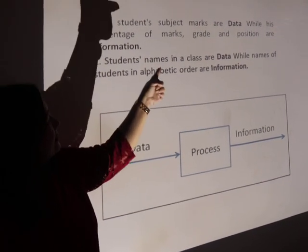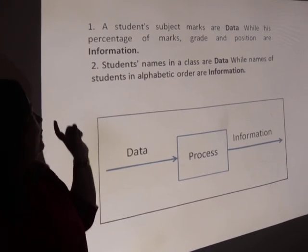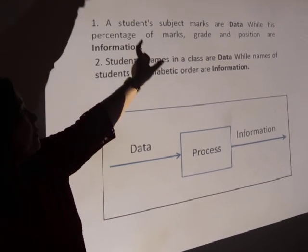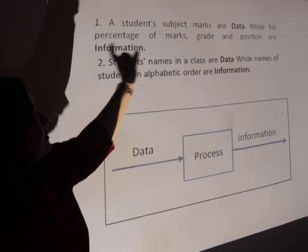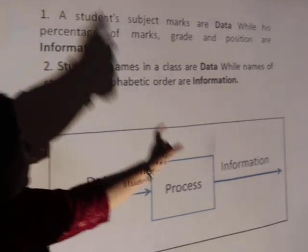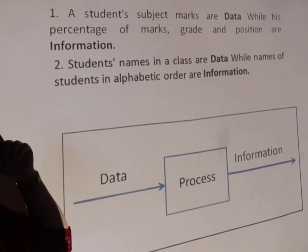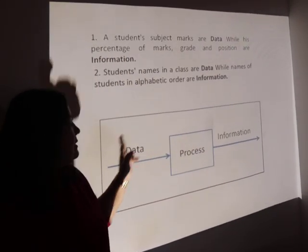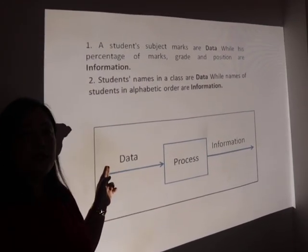Here is another example — the mark sheet of students, where we have to calculate the percentage of a student. We require the marks of the students in order to calculate the percentage. These marks are the data. Based upon the marks, the data is processed, after which the percentage is derived — which is the information. So information is basically the summarization of the data that we feed into the computer as input.